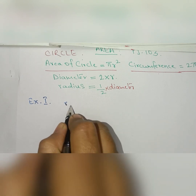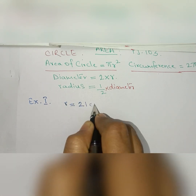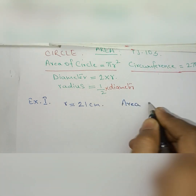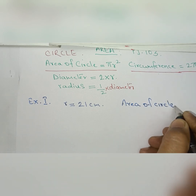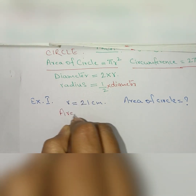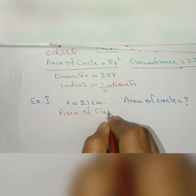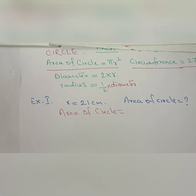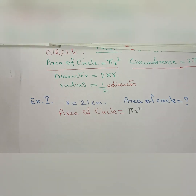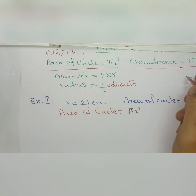The radius given is 21 cm, and we have to find the area of the circle. So first, as always, we write the formula. The formula for area of a circle is π r squared. The value of π is 22/7, and another value is 3.14. You can use either value.